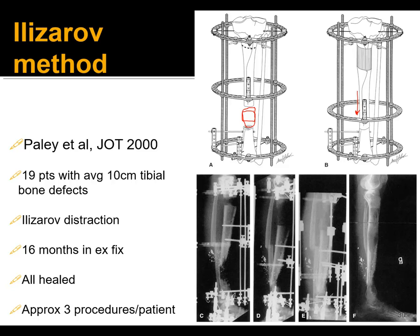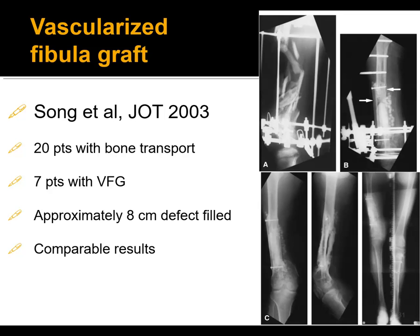Dr. Paley reported in the Journal of Orthopaedic Trauma 2000 on a case series with big defects — average 10-centimeter bone defects. Ilizarov distraction was done over 16 months in an external fixator. A lot of that is consolidation time — you keep it on so they can walk in the frame, worrying they'll fracture if you take it off. Approximately three procedures per patient was reported, though I would say probably a little bit low; many patients undergo a lot more.